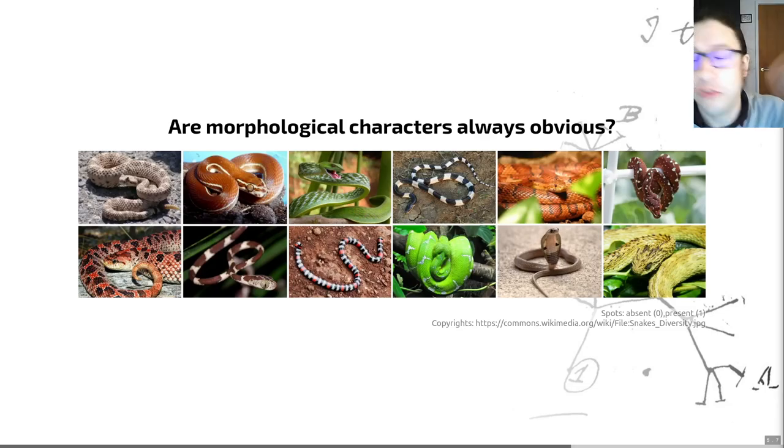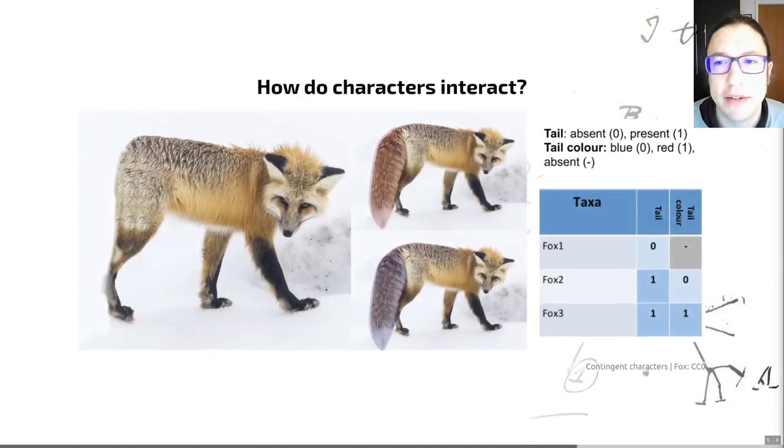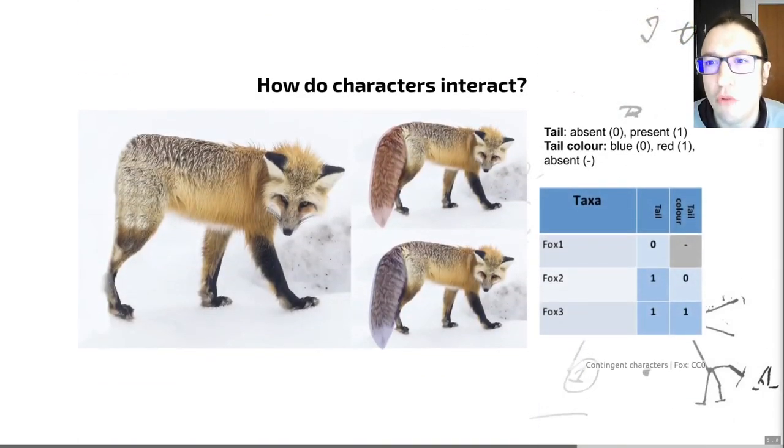And of course, colors are subjective. Those of you that were in the lecture for this course got to hear me pointing out that I see colors differently through my left and my right eye. So there is a subjective nature to colors. So often in cases such as these, we try and graph or otherwise quantify the feature and make character definitions based on that. So it's really important to think about how we formulate our characters when we're doing morphological phylogeny.